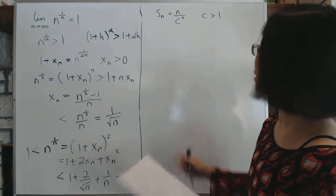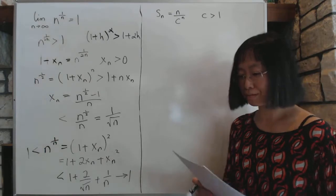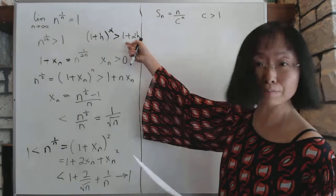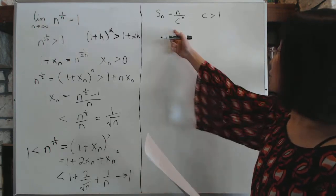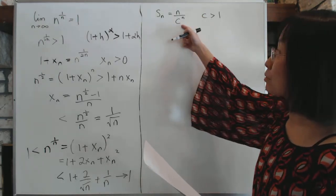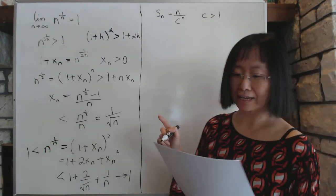Next, let's look at the next problem. We have something similar to what we've seen before, and again, we're going to use this particular convenient inequality. So we have sn equal to n over some constant to the power n, the constant being bigger than 1.